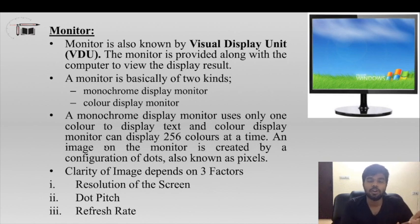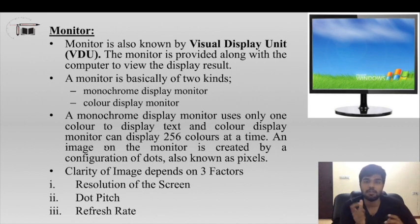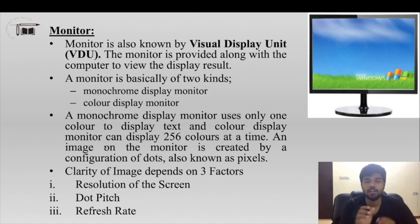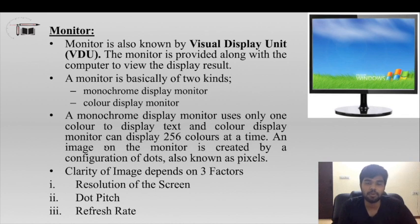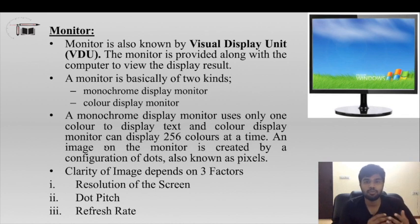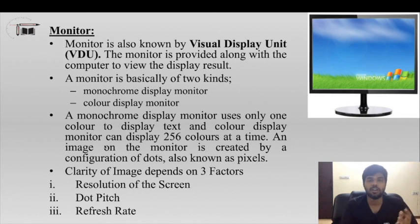Monitors are divided into two types: monochrome monitors and color display monitors. Monochrome means single color — 'mono' is single and 'chrome' is color. A color display monitor can display a maximum of 256 colors. These are the two basic kinds of monitors.